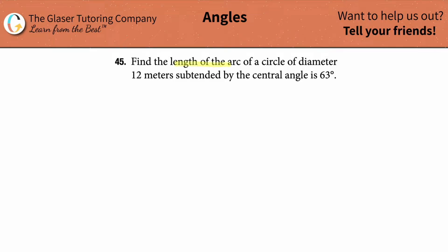Number 45, find the length of the arc of a circle of diameter 12 meters subtended by the central angle 63 degrees. Alright, so first step in this, we've got to find the arc length. Arc length of what? Well, arc length of part of the circle. What part? Well, the 63 degree part.